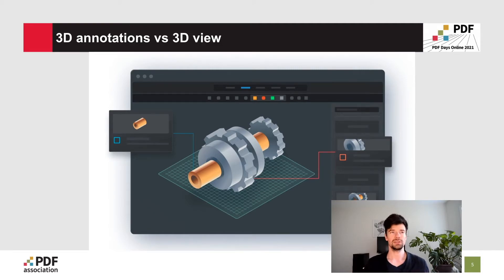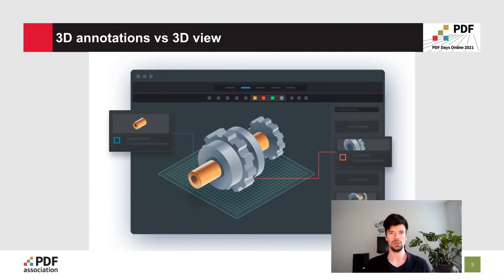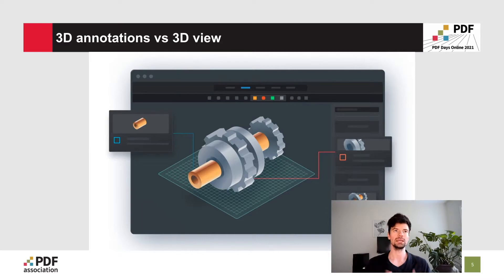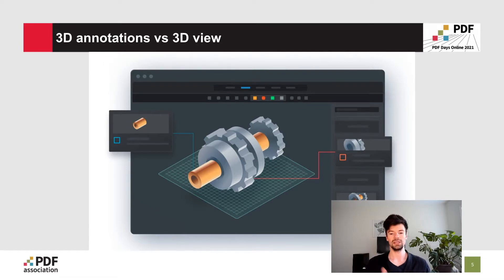One confusing aspect of 3D inside a PDF is that there are 3D annotations and also 3D views. The previous screen showed a 3D view. With 3D annotations, you can overlay a whole 3D model as a comment on a PDF document — that would be a 3D annotation. It has very similar feature support to a 3D view, except the 3D model is saved inside of the XFDF. It supports the same formats — U3D and PRC — and it's not to be confused with annotating a 3D model within a 3D view.